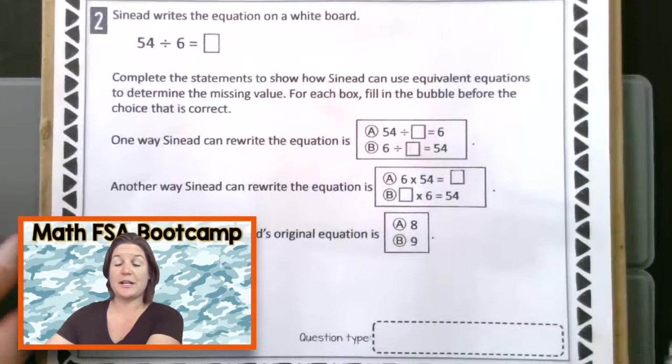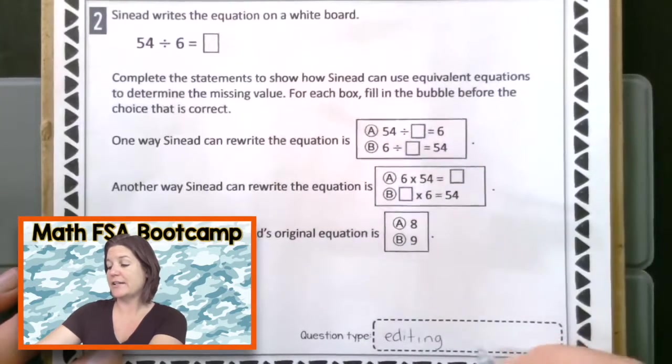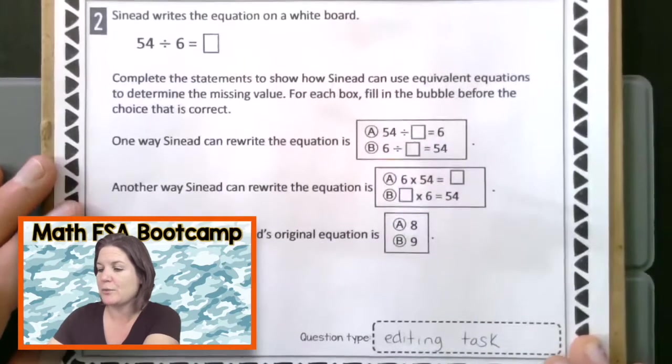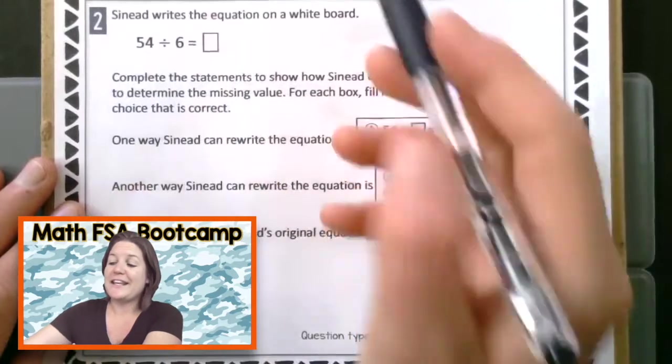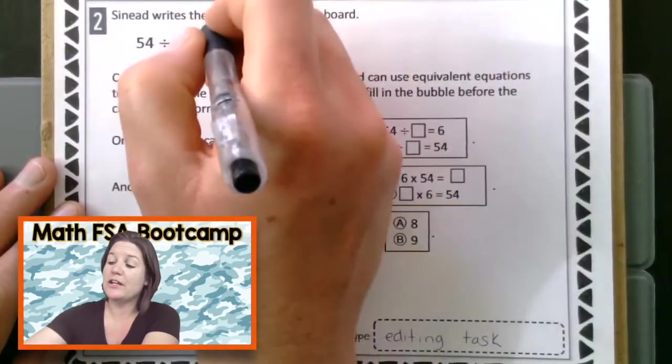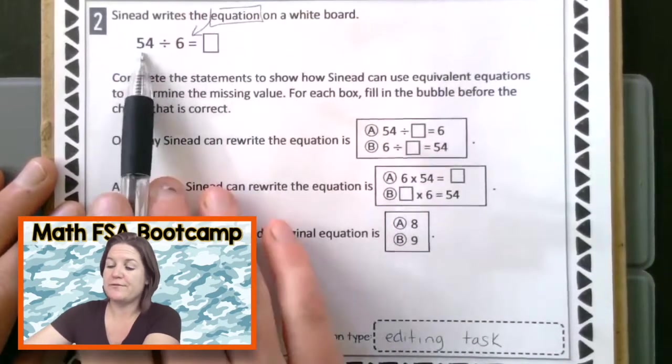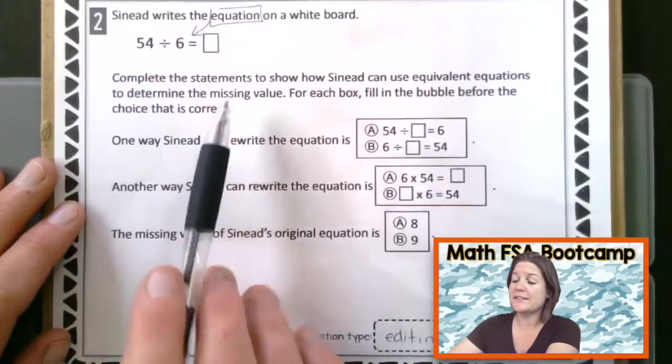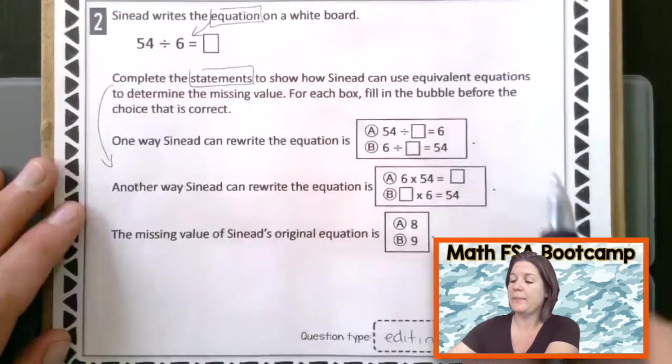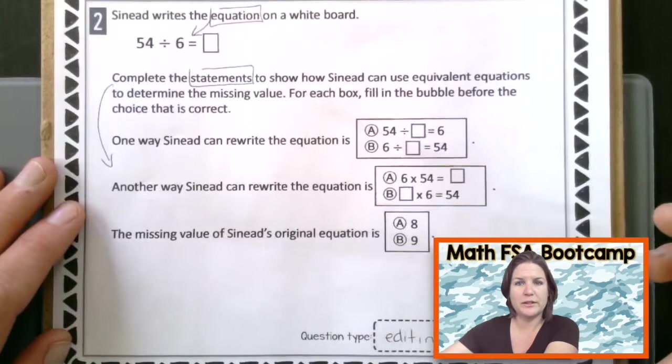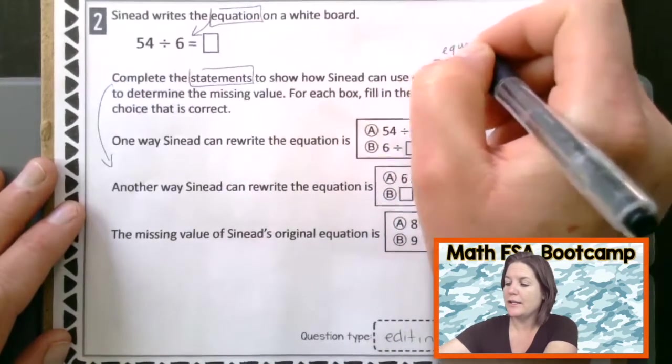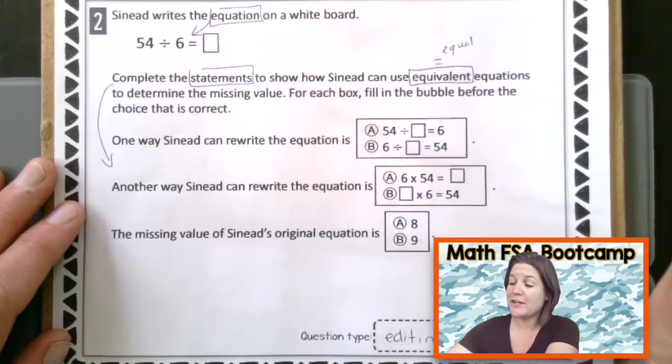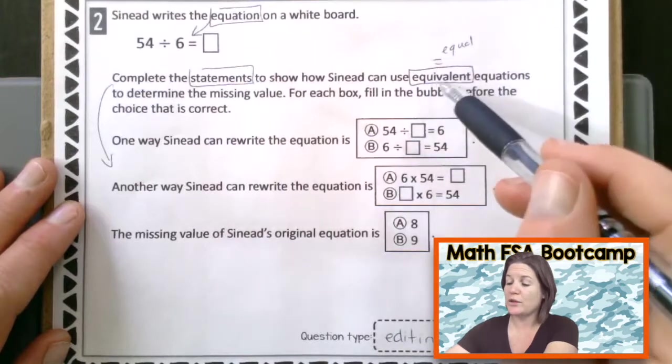Okay. Let's look at number two. We're going to go ahead and jot down the question type right here. This is called an editing task question. You're going to get real good at the different types of questions that we have. This says Sinead writes the equation on a whiteboard. An equation has an equal sign in it. She writes 54 divided by 6 equals something. Let's go ahead and read right here. It says complete the statements to show how Sinead can use equivalent, you know what equivalent means? It means equal. Equal equations to determine the missing value. Remember that you can pause the video at any time if you need to catch up with me and what I'm writing.